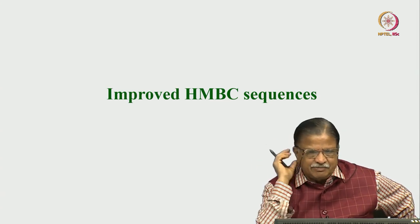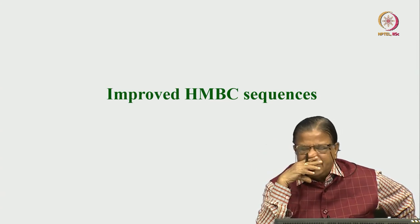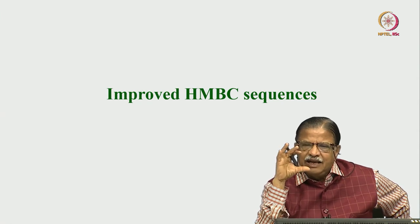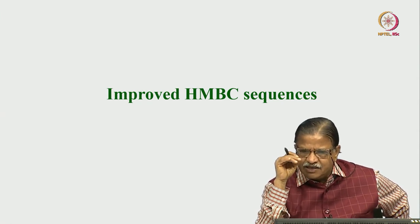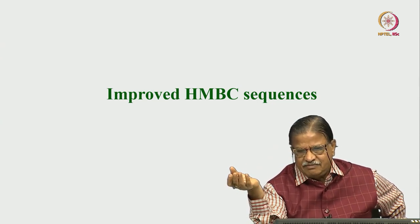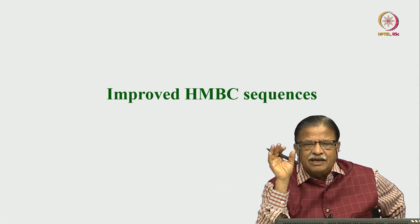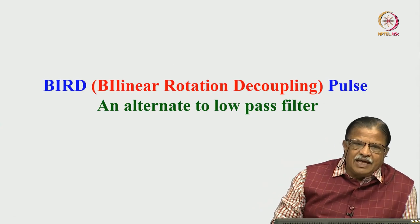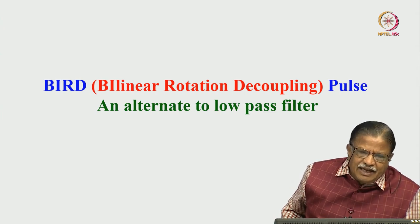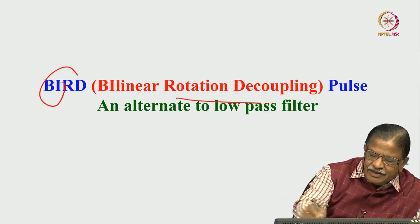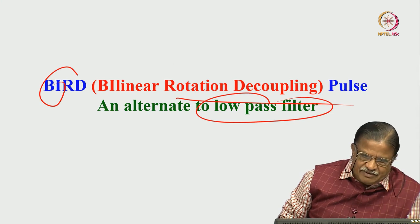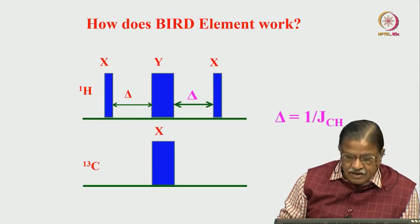There are always imperfections in the experiment — leakage, signal distortions — and these complications can be addressed by improving the pulse sequences. One improved approach uses a BIRD sequence — Bilinear Rotation Decoupling — as an alternative to the low-pass filter. Instead of using a simple low-pass filter, we can use the BIRD sequence.